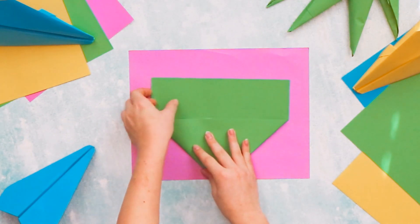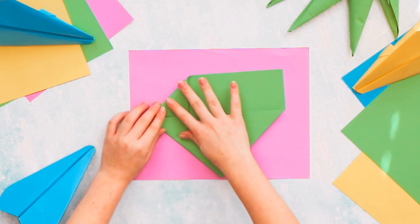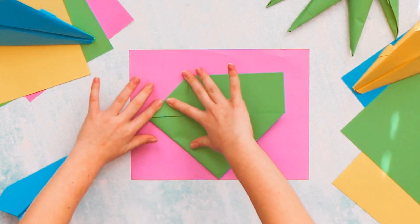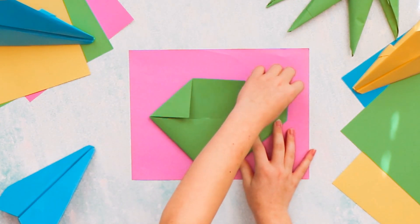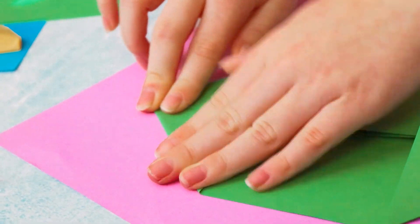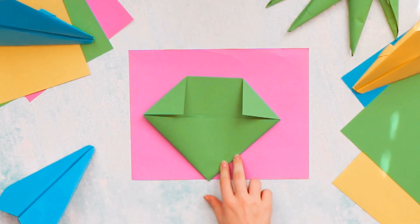Take these corners and fold it down just like this. You do it on both sides so it kind of makes like a diamond.